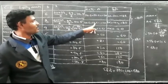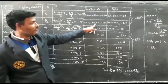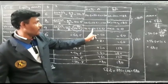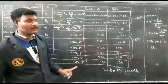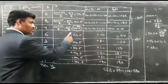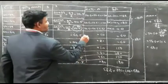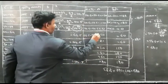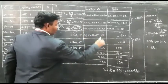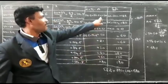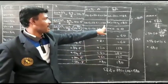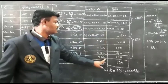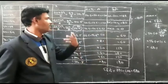So the deviations are: 34.5 minus 54.5, 44.5 minus 54.5, 54.5 minus 54.5, 64.5 minus 54.5, and so on. The Di values are: minus 20, minus 10, 0, 10, 20, 30, 40, 50, 60.